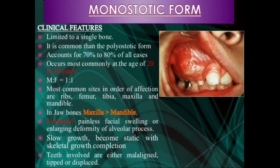In the monostotic form, clinical features are mostly confined to one bone. It is more common than the polyostotic form and occurs at age 20 to 30 years. Male to female ratio is 1:1. The most common sites are the ribs, femur, tibia, maxilla, and mandible — along the jaw bones, the maxilla is more involved than the mandible. Unilateral painless facial swelling is observed, with an enlarging deformity in the alveolar process. With skeletal growth, teeth may be tilted or displaced.